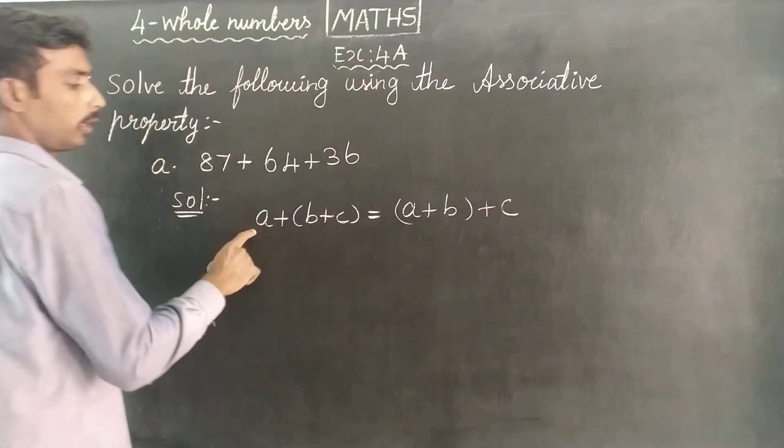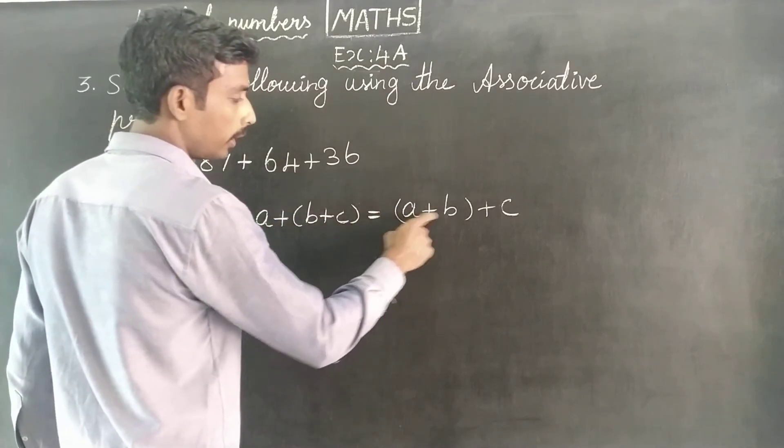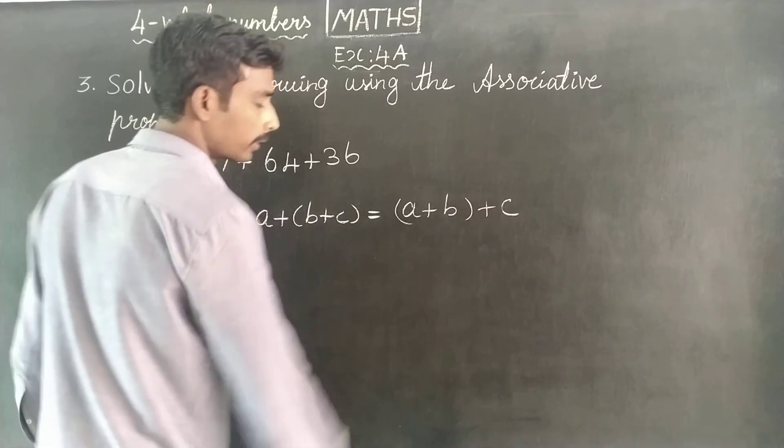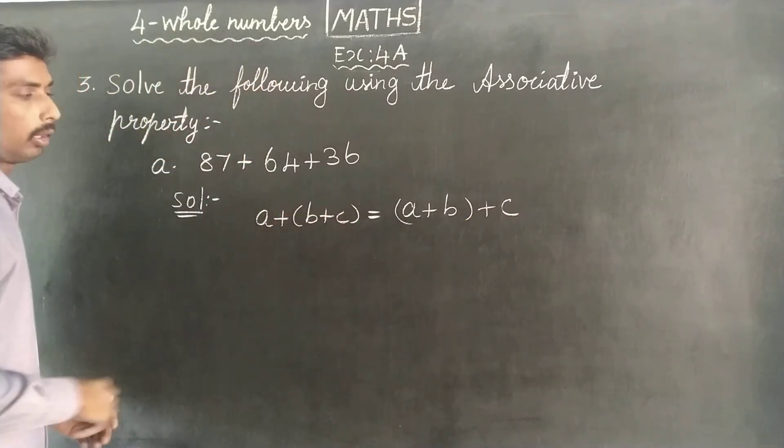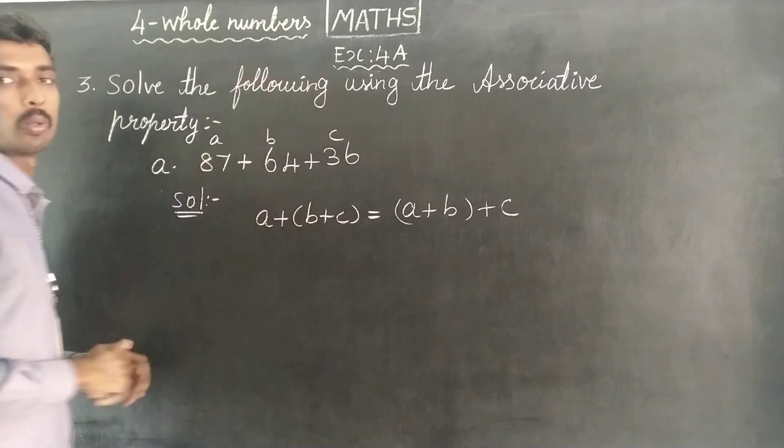So you will have a plus open bracket b plus c close bracket equals open bracket a plus b close bracket plus c. You will have a round bracket, so you will have a, b, c value to go back.